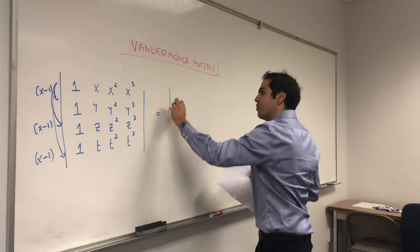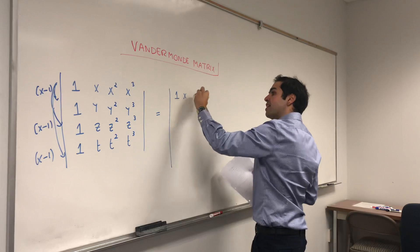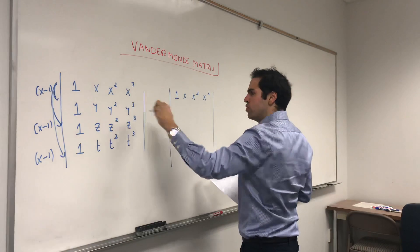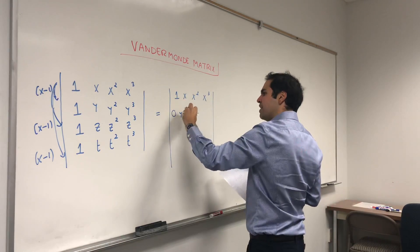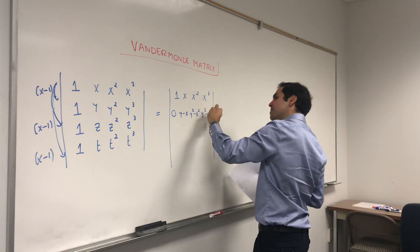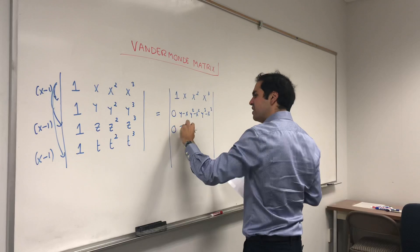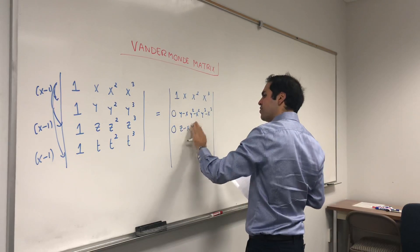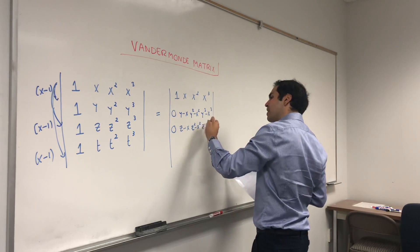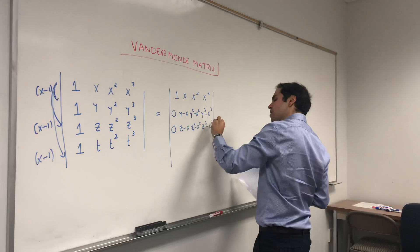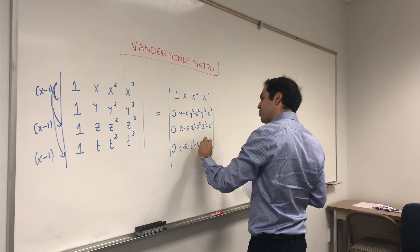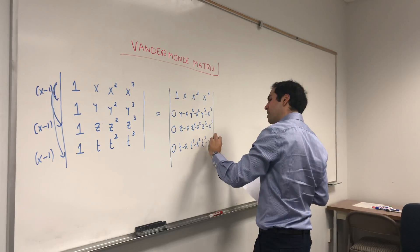And what do we get? The first row is still 1, x, x², x³. The other rows become: 0, y−x, y²−x², y³−x³. Same thing for z: 0, z−x, z²−x², z³−x³. And then: 0, t−x, t²−x², t³−x³.